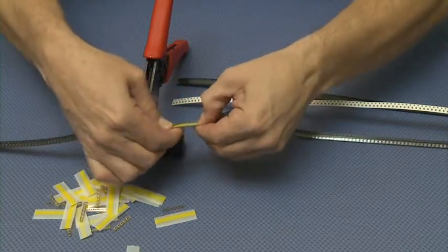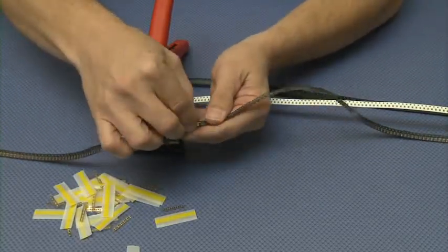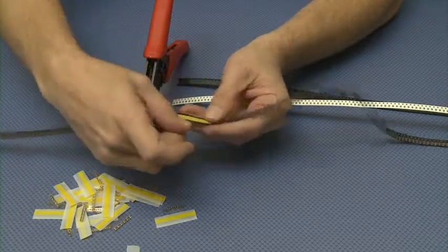Then we will press firmly all the way through on both sides. Then we will remove the clear plastic piece from the splice.